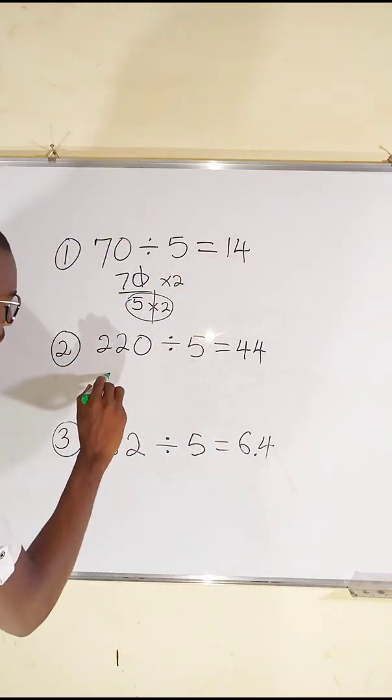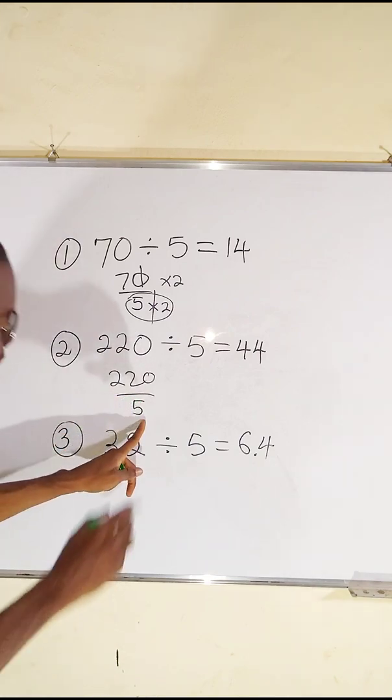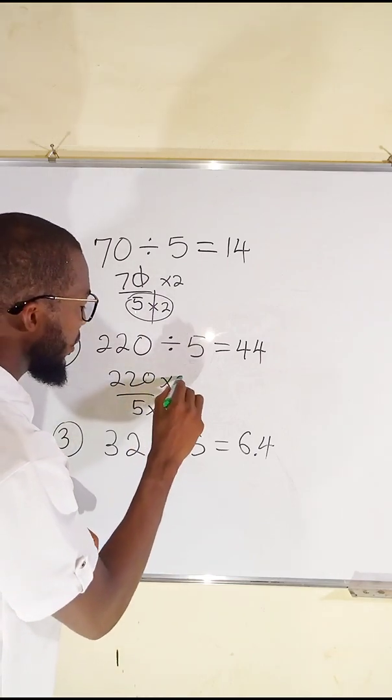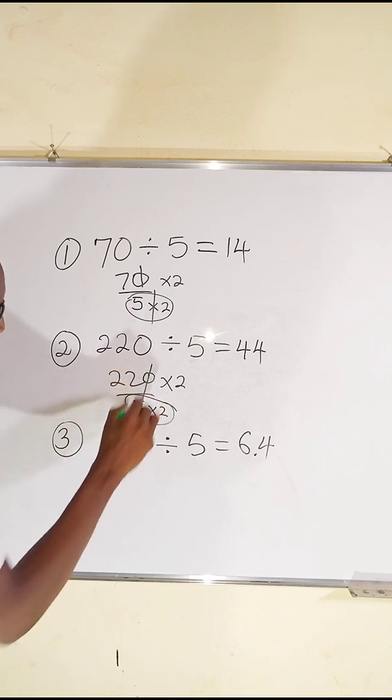The second one, you have to do the same thing. If you multiply this by 2 it becomes 10. For equivalency you have to multiply the top number by 2. This is 10, and this 10 will eliminate this 0, and 22 times 2 is 44.